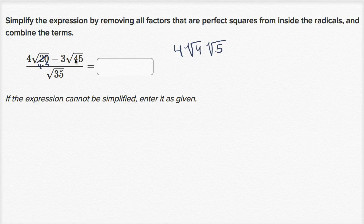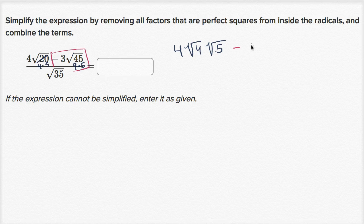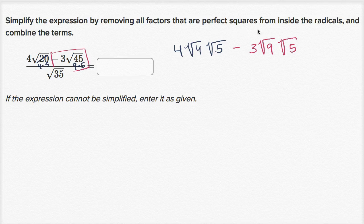And 45 is the same thing as nine times five. The reason I'm thinking about four and nine is because those are perfect squares. So I can write this as four times the square root of four times the square root of five. And then this part is minus three times the square root of nine times the square root of five, since the square root of 45 equals the square root of nine times five, which equals the square root of nine times the square root of five.